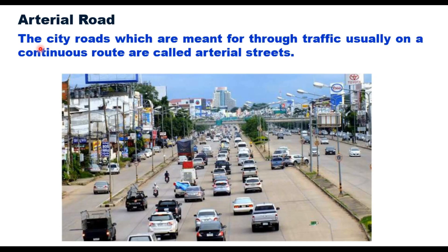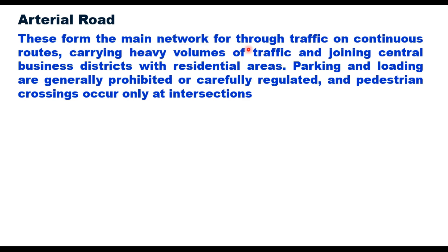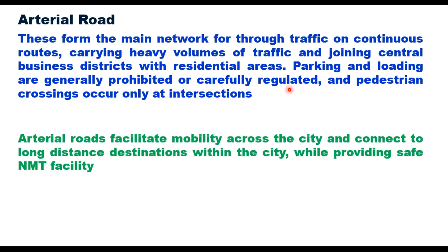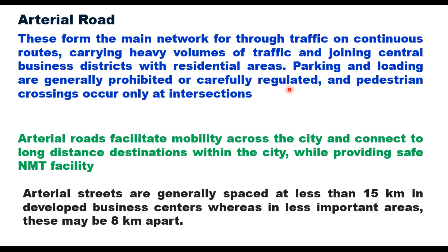Arterial roads are city roads meant for through traffic, usually on a continuous route. They form the main network for through traffic carrying heavy volumes, joining the central business district with residential areas. Parking and loading are generally prohibited or carefully regulated, and pedestrian crossings occur only at intersections. These roads facilitate mobility across the city and connect to long-distance destinations while providing safe non-motorized traffic facilities. Arterial streets are generally spaced at less than 1.5 km in developed business centers and about 8 km apart in less important areas.